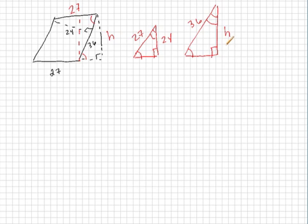So, if we have similar triangles, the ratios of the sides are going to be equal. So, 24 over 27 is going to be equal to h over 36.